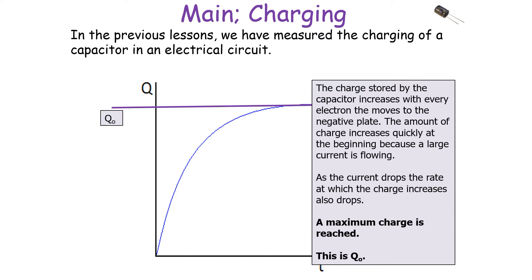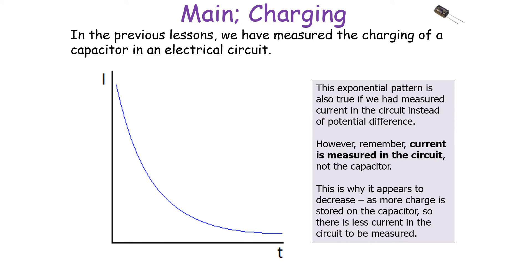We can find a maximum charge which we call Q0. We can also look at what happens when we measure current instead of charge or potential difference. Remember that current is measured in the circuit, not through the capacitor. It still follows an exponential pattern; however, this exponential pattern is in the opposite direction to that of charge and potential difference, because as more charge is stored on the capacitor, there is less current available in the circuit to be measured.